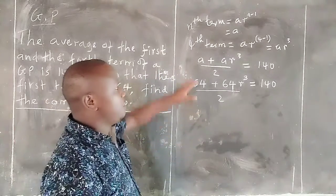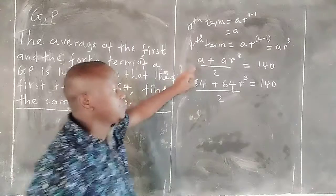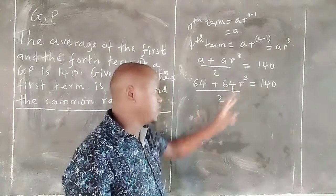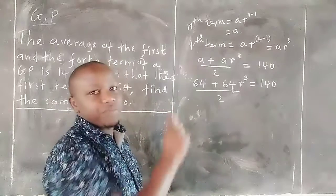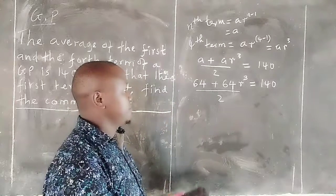Therefore the average of the first term is 64 and the fourth term which is 64 r cubed. When we divide them by 2, that means now taking the average, they should give us 140.